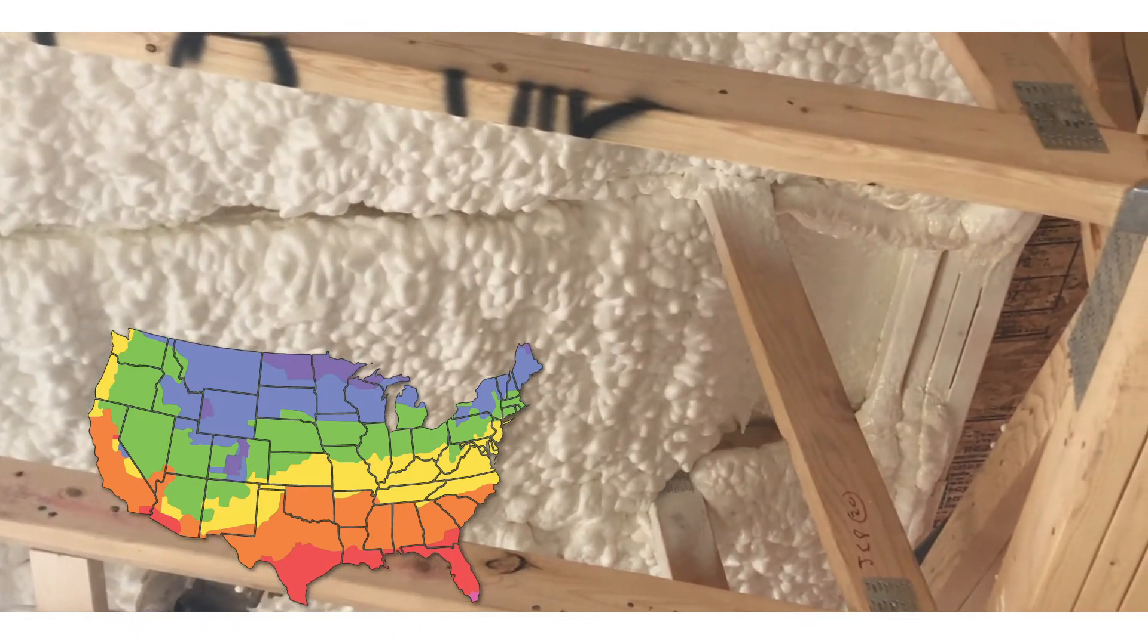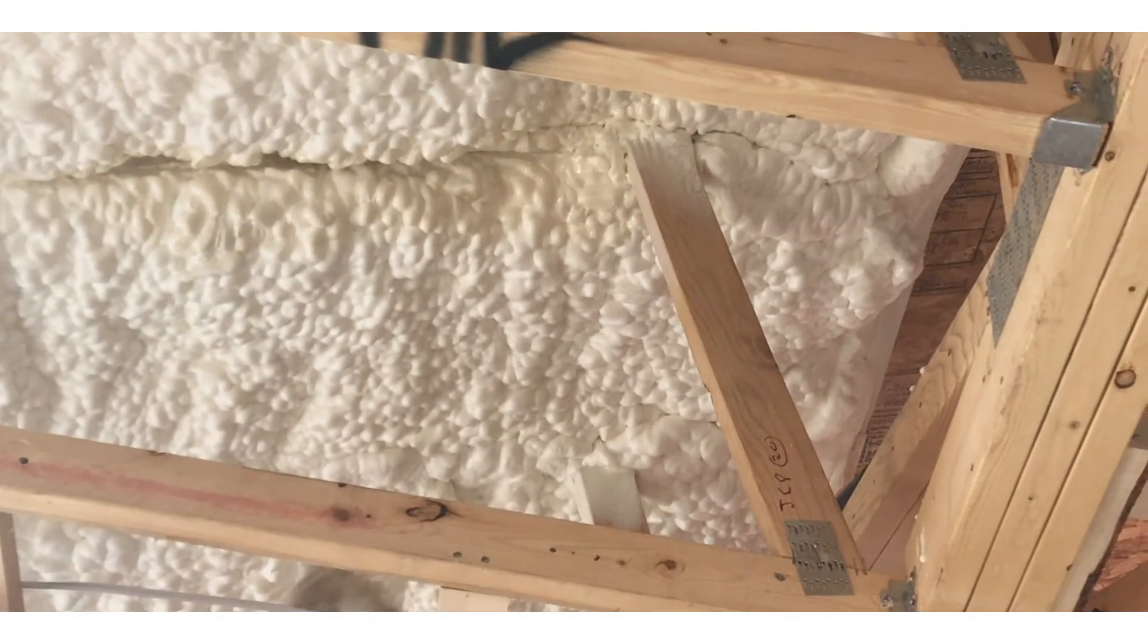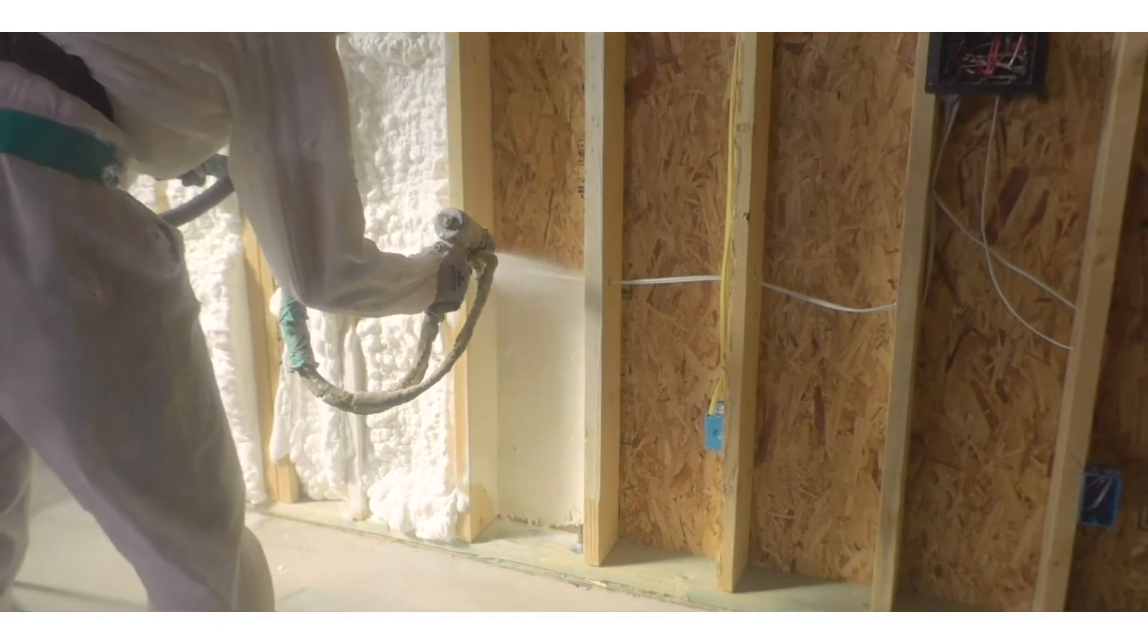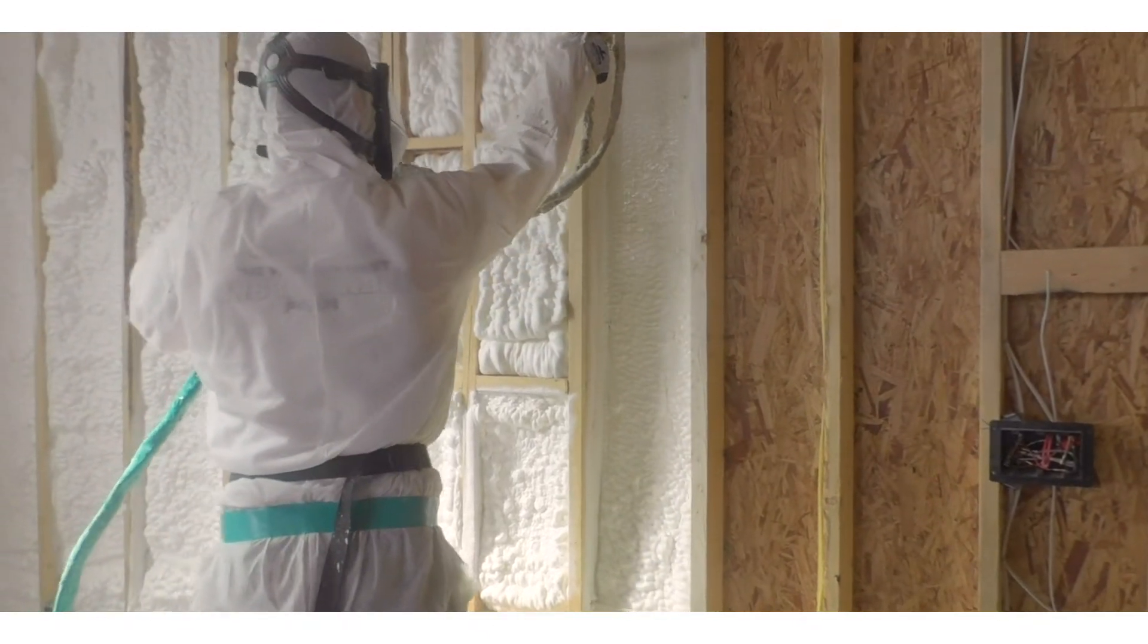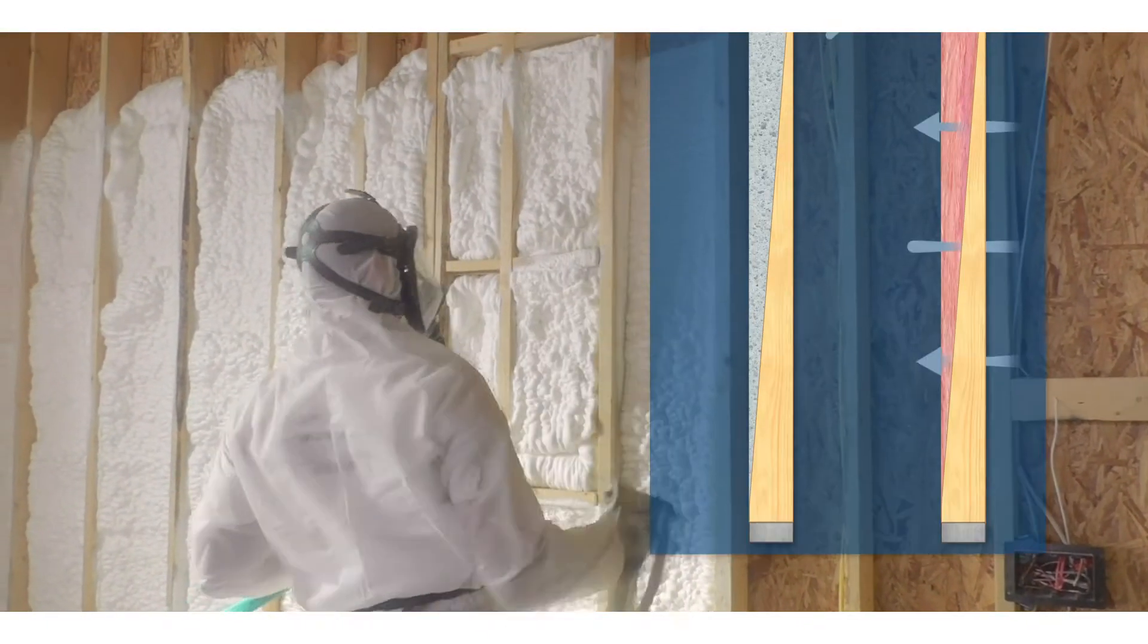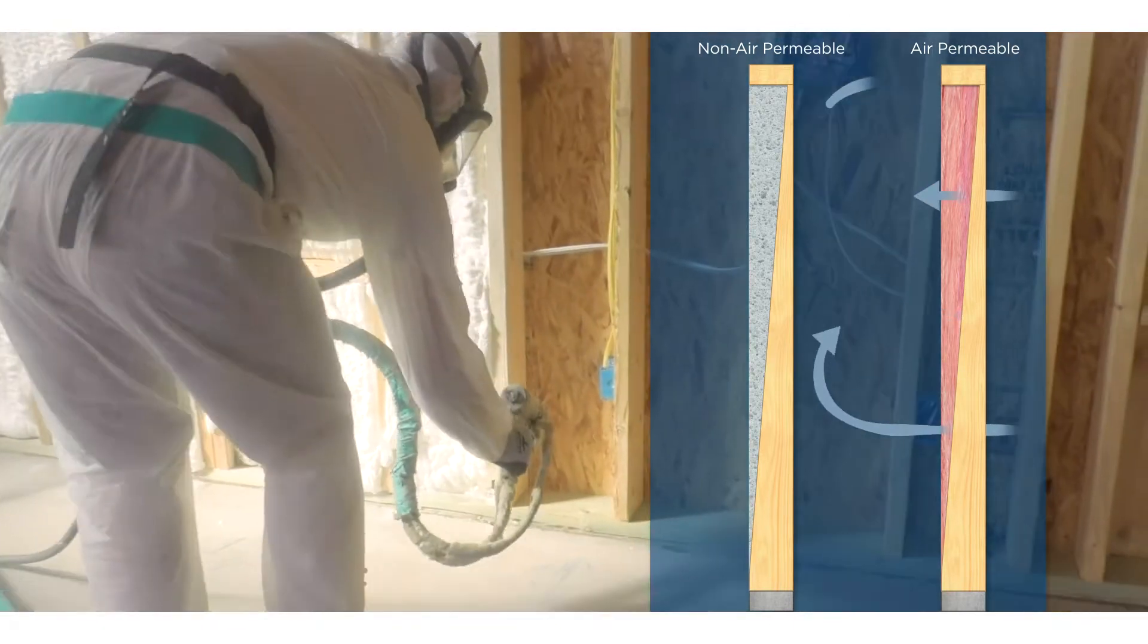So when choosing an insulation material, you should consider R-value along with air leakage. Air leakage, also called convective heat flow, can negatively affect a building's energy efficiency. Air leakage occurs when outside air enters or conditioned air leaves the building through cracks and openings.